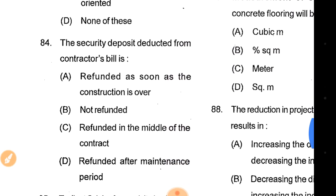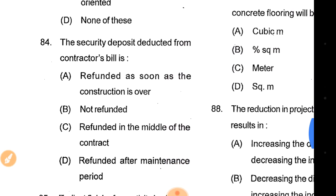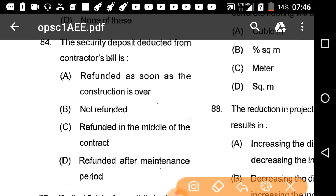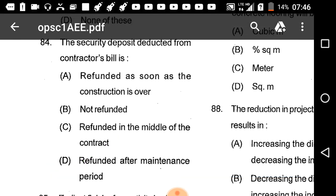Question 83: The security deposit deducted from a contractor's bill is refunded after the maintenance period. Option D is the correct answer.